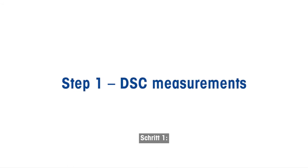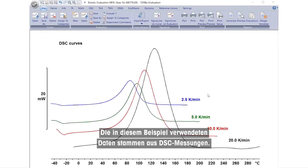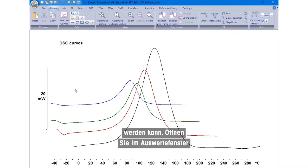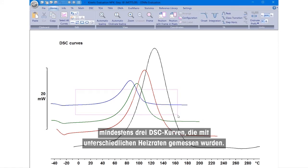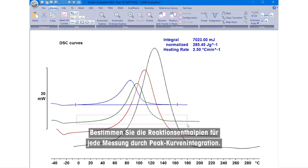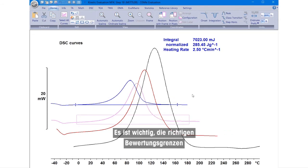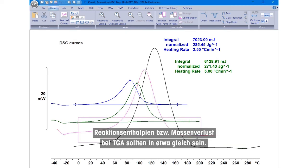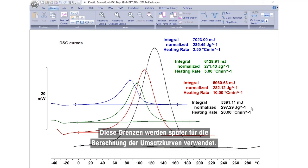Step 1. The data used in this example originates from DSC measurements, although the same procedure can also be used for TGA. Open at least three DSC curves measured at different heating rates in the evaluation window. Determine the reaction enthalpies for each measurement by peak curve integration. It is important to select the correct evaluation limits and baseline type. The reaction enthalpies, or mass loss in the case of TGA, should be more or less equal. These limits are later used to calculate the conversion curves.